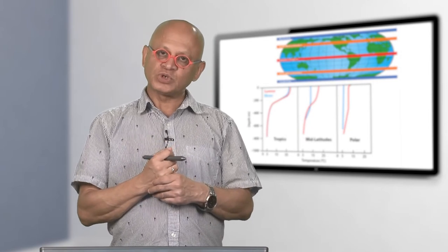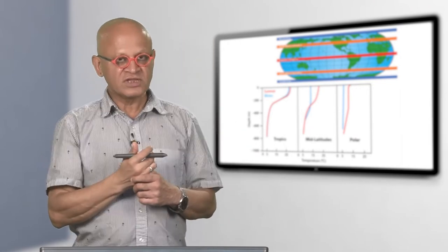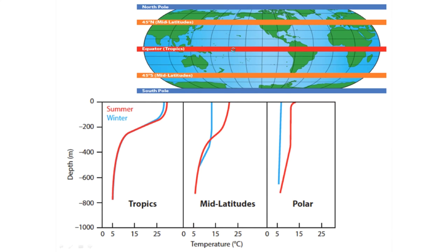The ocean temperature profile is somewhat simpler than the atmosphere. In the tropics, both summer and winter show a well-mixed layer near the surface due to wind-driven turbulence, then a rapid change in temperature called the thermocline, after which temperature remains almost constant. In winter in the tropics there is some seasonal change even at low latitudes as air is drier and there is some cooling.